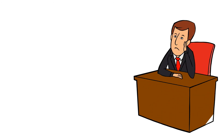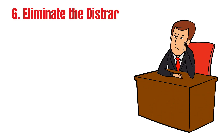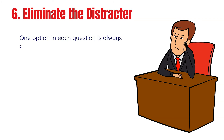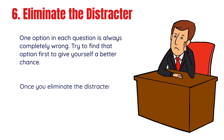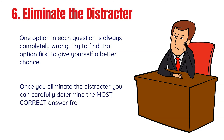Tip number six: eliminate the distractor. One option in each question is always completely wrong. Try to find that option first to give yourself a better chance. Once you eliminate the distractor, you can carefully determine the most correct answer from the remaining three.